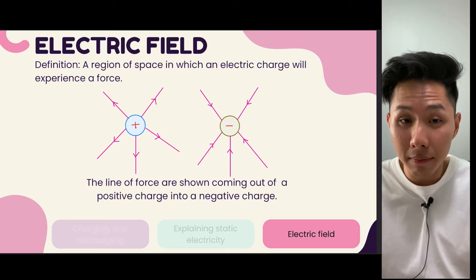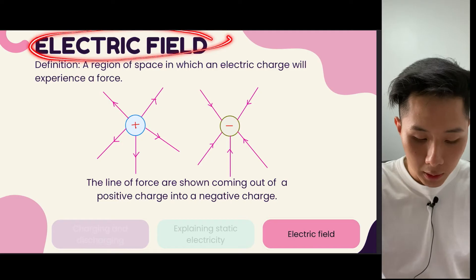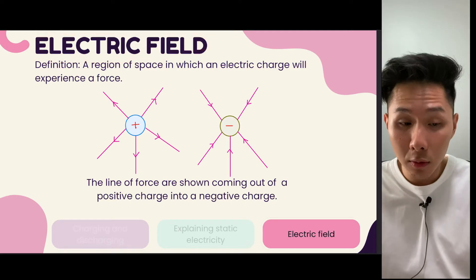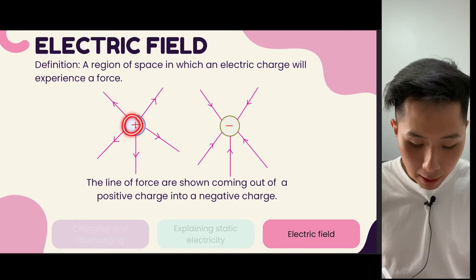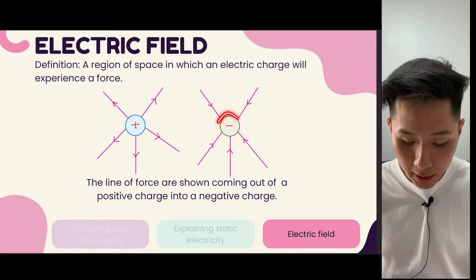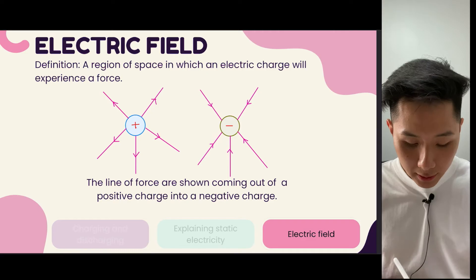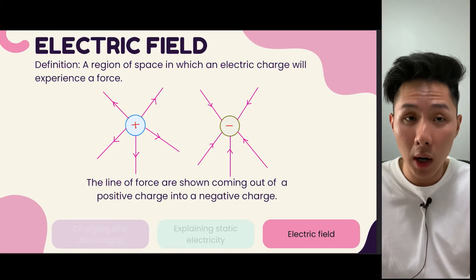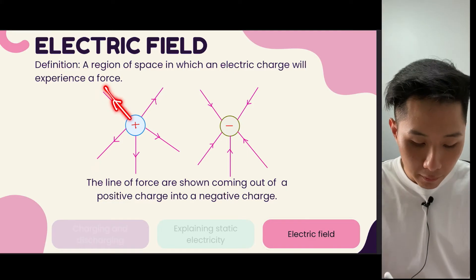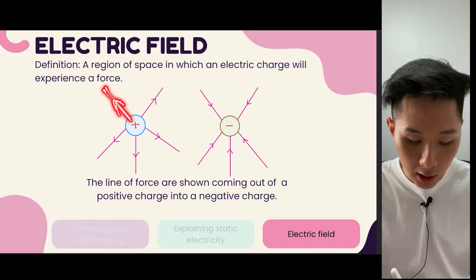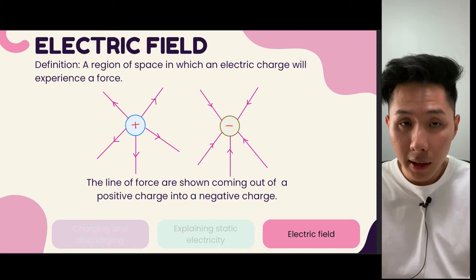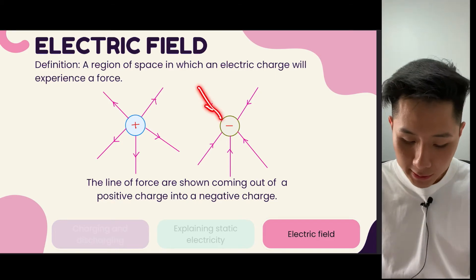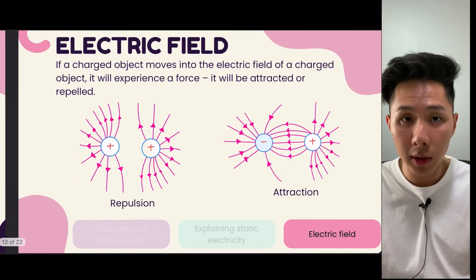Here's another concept you need to know for this chapter — it's called an electric field: a region of space in which an electric charge will experience a force. We have positively charged and negatively charged atoms, and there is a line of force around these charges. This is why your hair is attracted to the balloon — the hair is positively charged and it moves towards the negatively charged object.